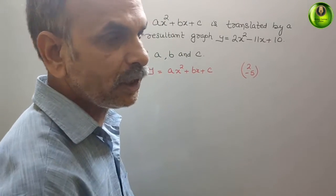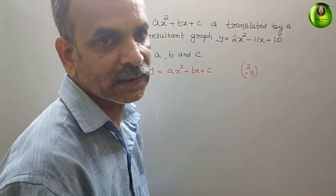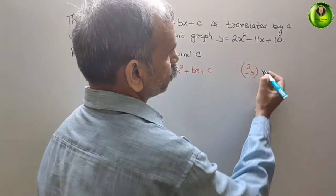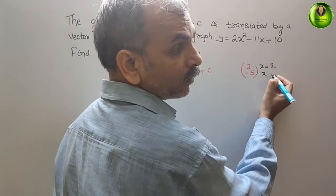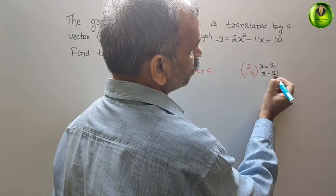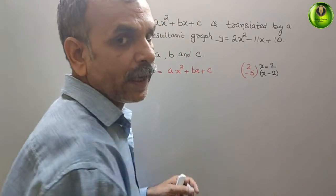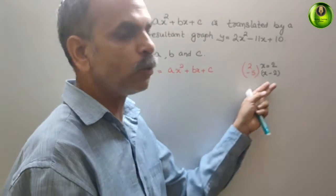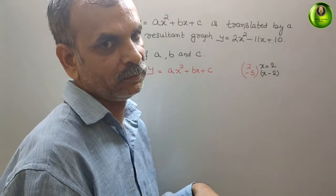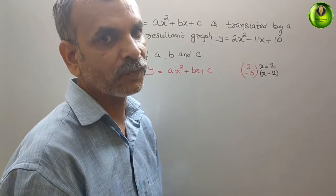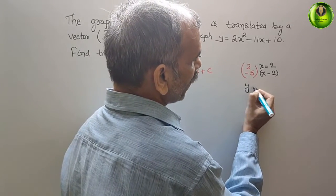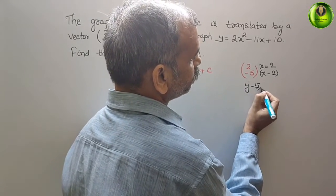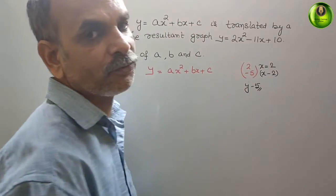So now if you see, if x is 2, so therefore the vector is x minus 2. That means we have to move towards our left side. Next is minus 5, that is your y. So it means y minus 5.